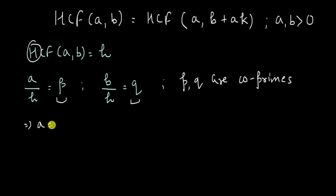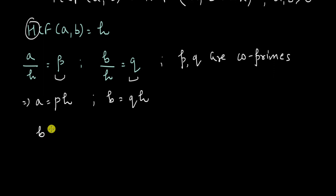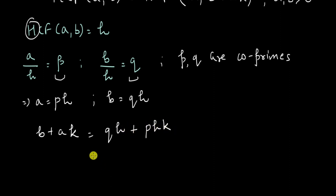This means A is equal to PH and B is equal to QH. Now let me compute B plus AK, because that is what I want to use. So B plus AK equals QH plus PH times K. Taking H as common, I get H times (Q plus PK).